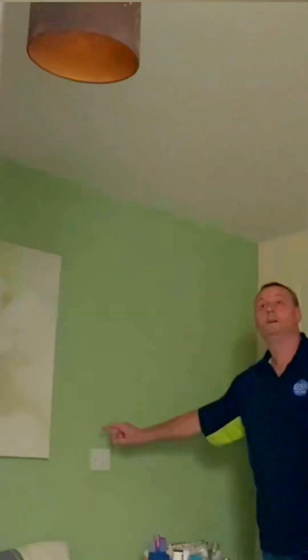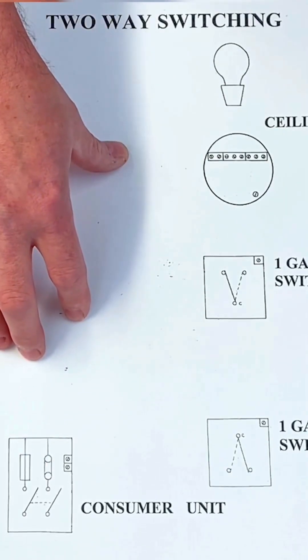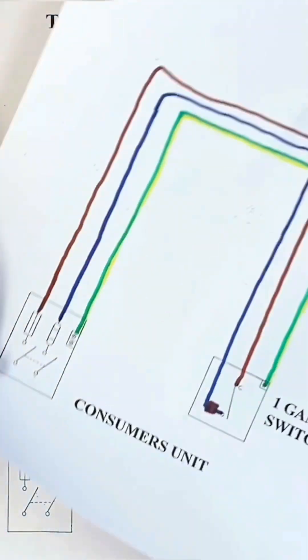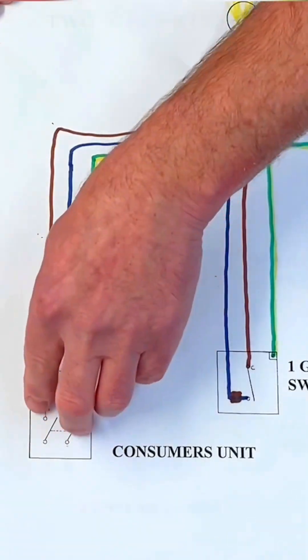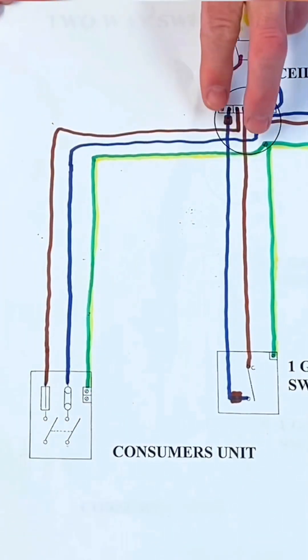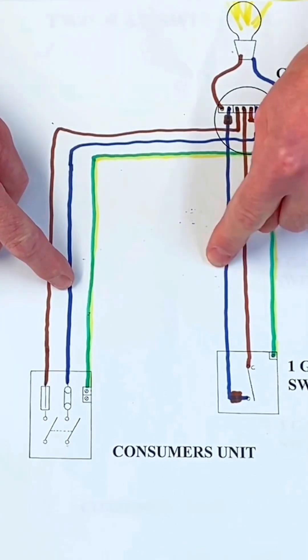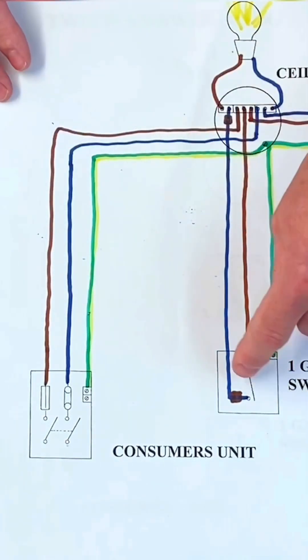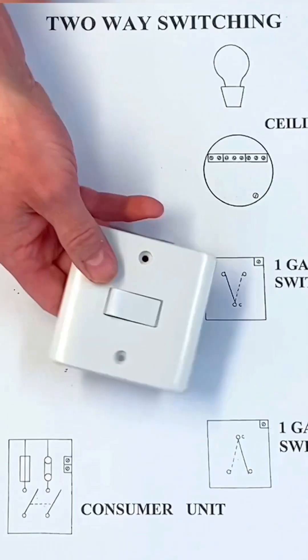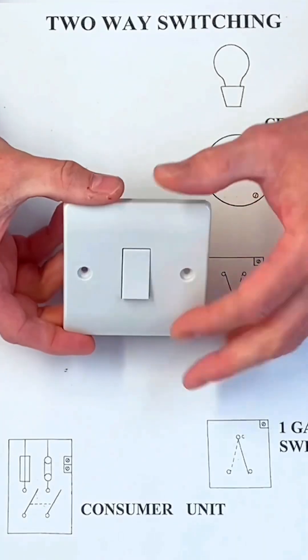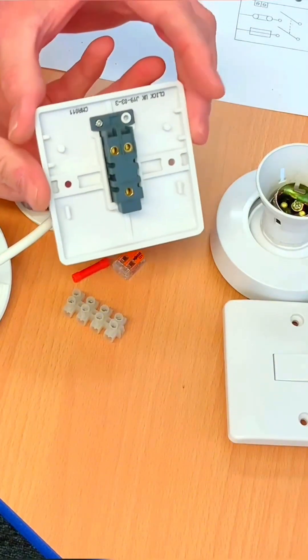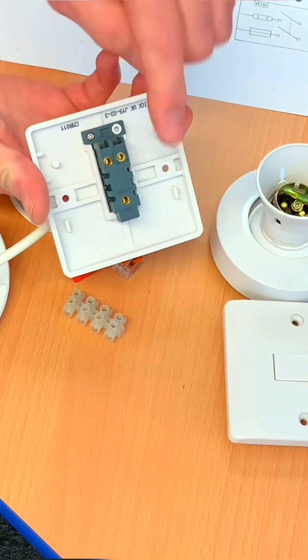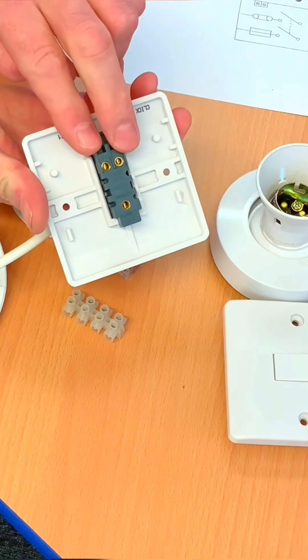We've got two two-way switches. You walk into a bedroom, you turn on the light, you walk to another position, and you can turn off that light - two-way switching. This is a two-way switch, so it's one gang, meaning there's only one switch on it, but as we look here we can see it's two-way. There is a common, an L1, and an L2.